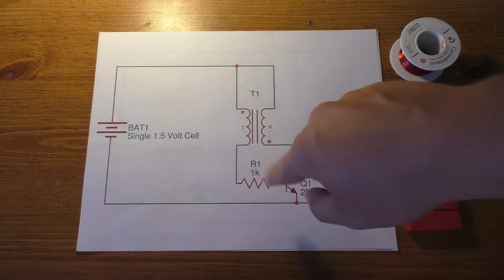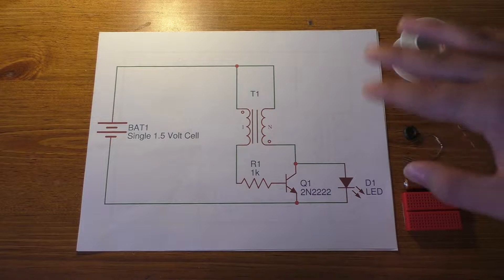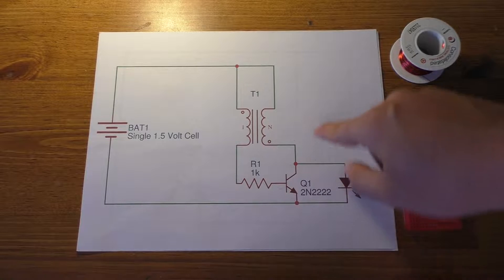But usually the lower the resistance, the brighter it gets to a certain point, and then it starts getting dimmer and just draws a lot more current.